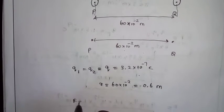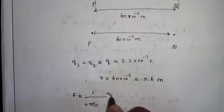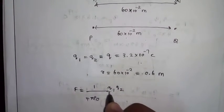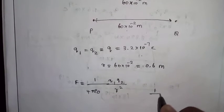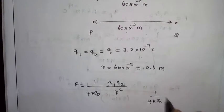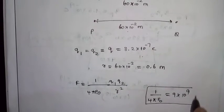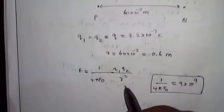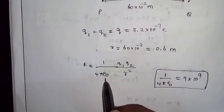F is equal to 1 by 4 pi epsilon 0 into q1 q2 by r square. R is the distance, q1 q2 is the charge, epsilon 0 is permittivity of free space.